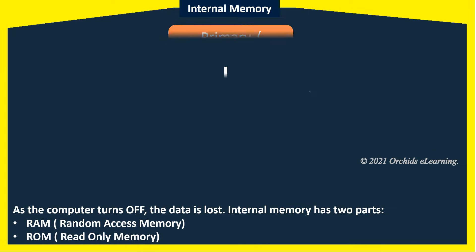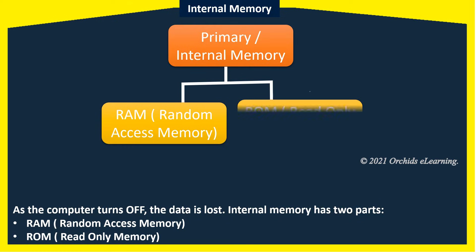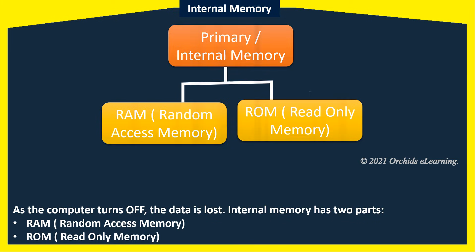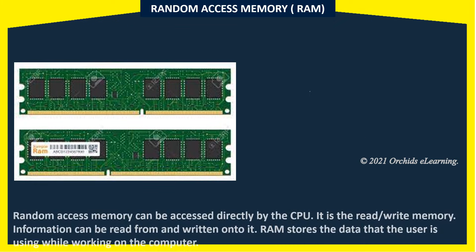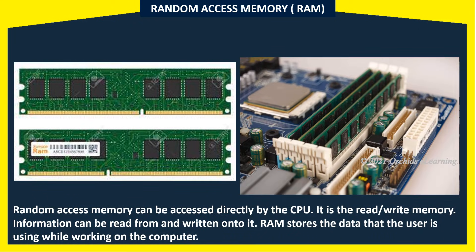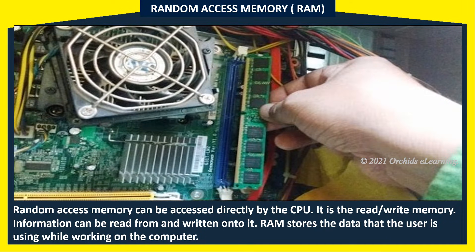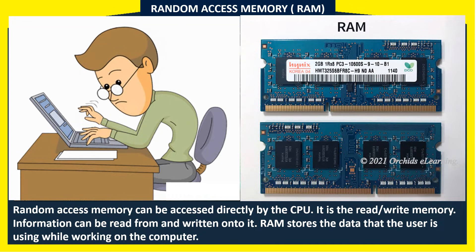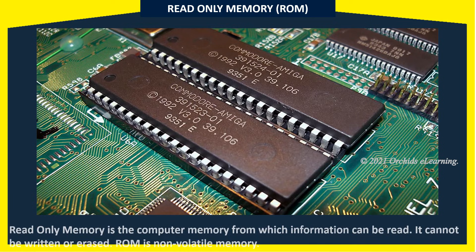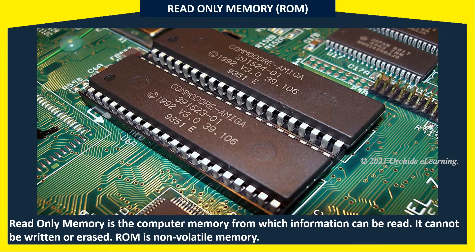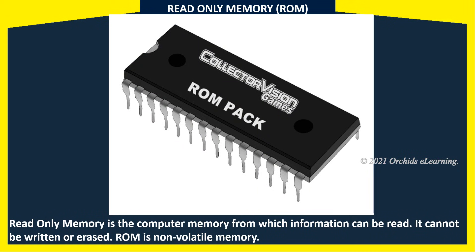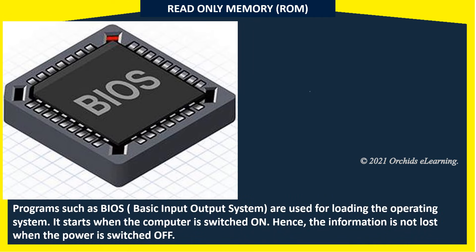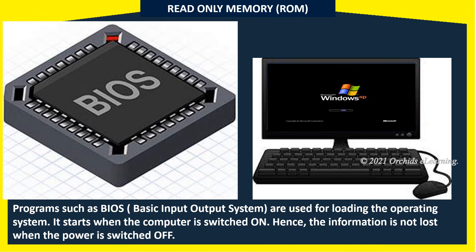Internal memory has two parts: RAM (Random Access Memory) and ROM (Read-Only Memory). Random Access Memory can be accessed directly by the CPU — it is the read-write memory, meaning information can be read from and written on to it. RAM stores the data that the user is using while working on the computer. Read-Only Memory is the computer memory from which information can only be read; it cannot be written or erased. ROM is non-volatile memory. Programs such as BIOS (Basic Input-Output System) are stored in ROM and are used for loading the operating system when the computer is switched on, so the information is not lost when power is switched off.